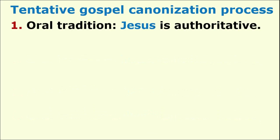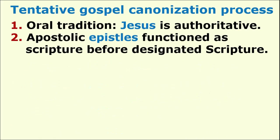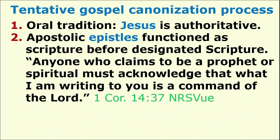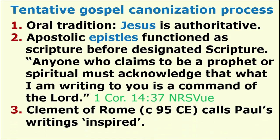We shall try to summarize the canonization process in 20 steps. First, there was the oral tradition, in which Jesus alone was authoritative. Secondly, we have the apostolic epistles, which functioned as scripture before being designated scripture. In 1 Corinthians, Paul wrote: 'Anyone who claims to be a prophet or spiritual must acknowledge that what I am writing to you is a command of the Lord.' Clement of Rome, in about the year 95, calls Paul's writings inspired.